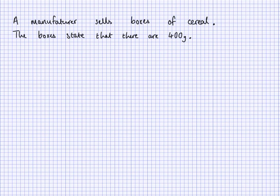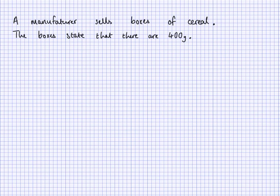Not all boxes will have the same amount. Some may have less than 400 grams, some may have more. So what a manufacturer would do is they might use a control chart. The way they manage their manufacturing is they need to use the control chart to see if the manufacturing process is working fine or something needs to be done about it. In this process, a manufacturer will take samples of these boxes and check some data around the samples.